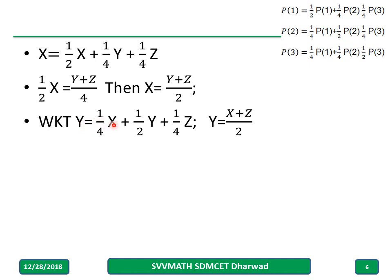Again, you have y equal to 1 by 4 x plus half y. Taking half y to this side, it will become minus, so you will get half y equal to, again LCM will become 4, the way you have done for the first one. The second one will give y equal to x plus z by 2. Similarly, do the third one, you will get z equal to x plus y by 2.